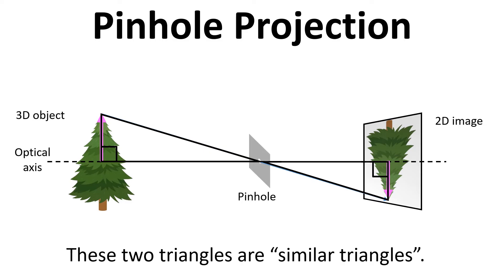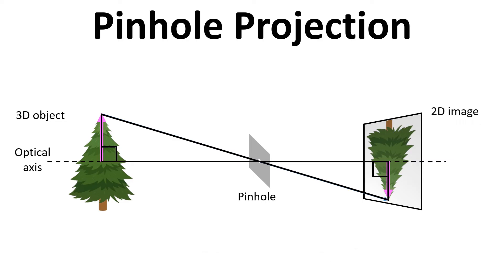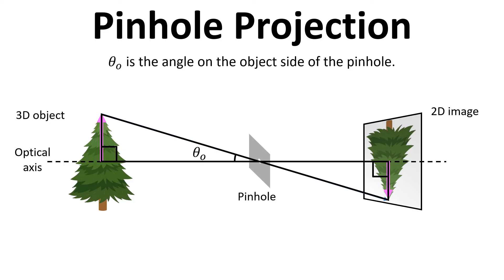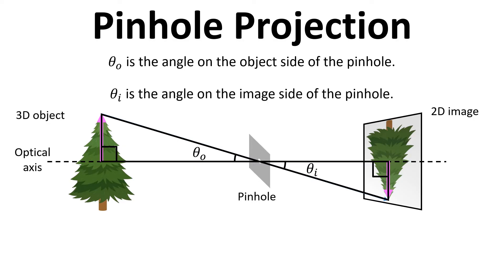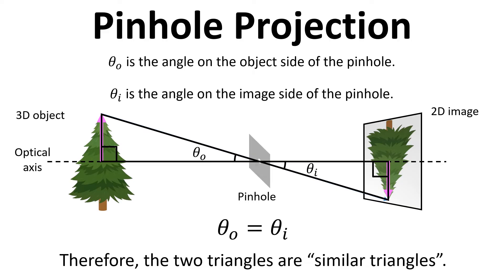These two triangles are actually similar triangles — a particular mathematical term that describes triangles that have the same angles but not necessarily the same lengths. We have theta_o for the angle on the object side of the pinhole and theta_i for the angle on the image side. Because these two angles are formed by straight lines that cross over, theta_o equals theta_i, and therefore the two triangles are similar.